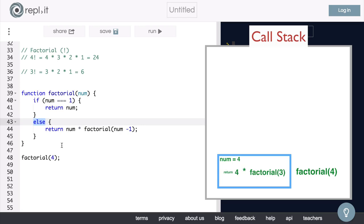So, now we call factorial of 3, and in this function, num will equal 3. And since num is still not equal to 1, we will have to return 3 times factorial of num minus 1, or 2.